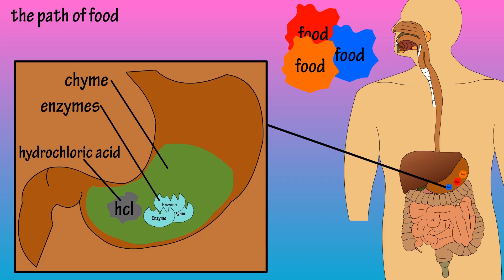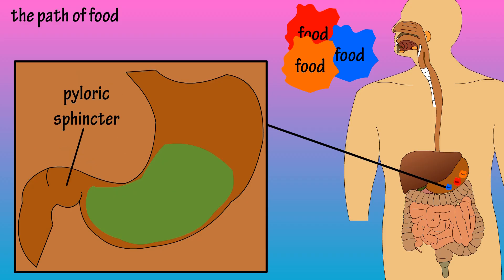There is a ring of muscle near the end of the stomach that is called the pyloric sphincter. This muscle opens at intervals to allow small quantities of the chyme to enter the first part of the small intestine, the duodenum. Small quantities are released to avoid overwhelming the small intestine's digestive processes.